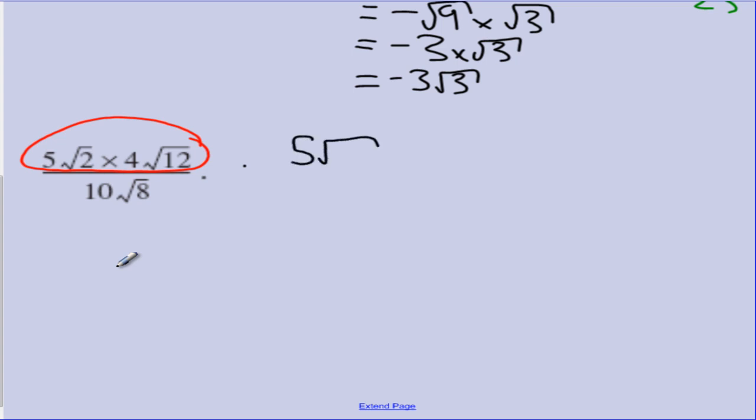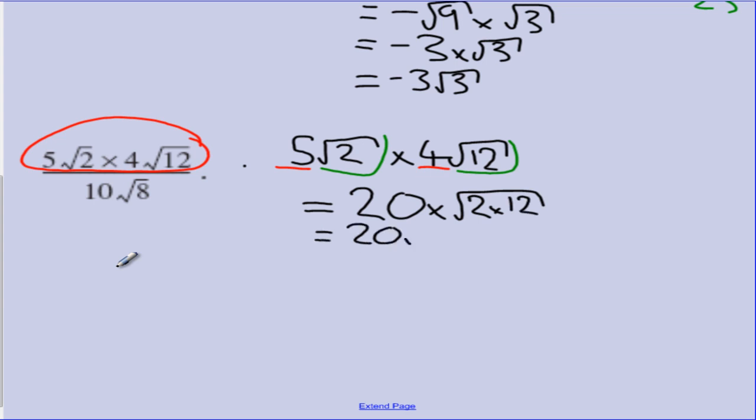Rewrite the top. 5 root 2 multiplied by 4 root 12. Now remember, when multiplying surds together, it is the coefficients by coefficients and the surds by the surds. So our next line is going to look like 5 times 4 gives us 20 multiplied by, under the surd, 2 times 12. So that will give us 20 root 24.